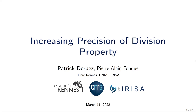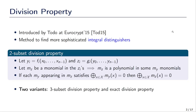Hello everyone. In this video I will present a joint work with Pierre-Alain Fouque about division property. Division property was introduced at Eurocrypt 15 and it is a method to find sophisticated integral distinguishers. Originally, to search for integral distinguishers we started with a collection of plaintext such that one word takes all possible values while the others remain constant, and we observe that the corresponding ciphertext, when summed, has at least one word summing to zero.